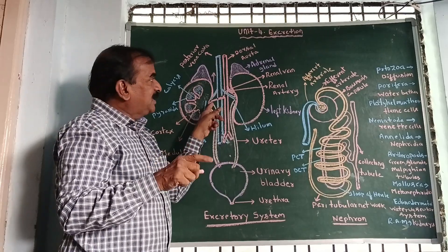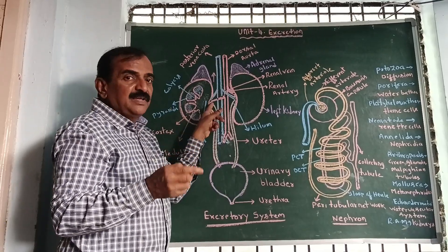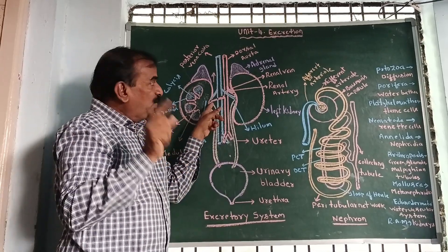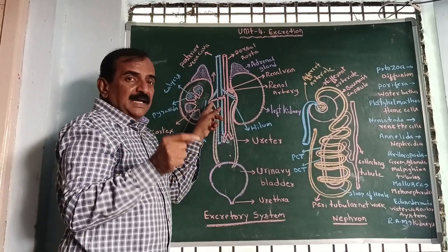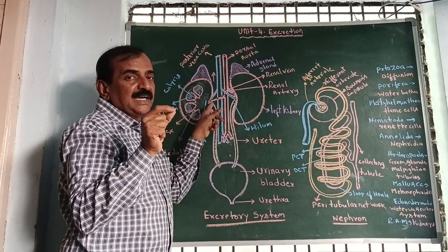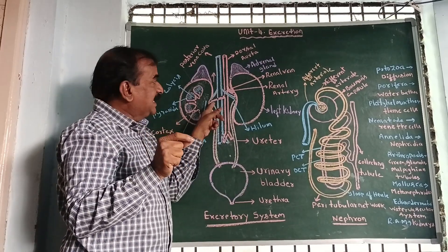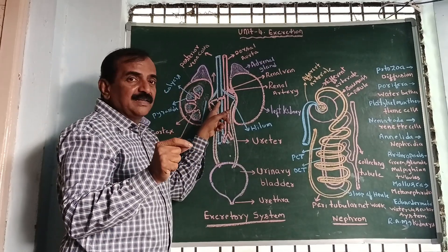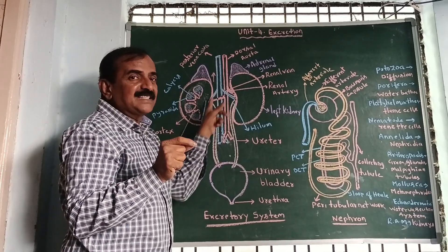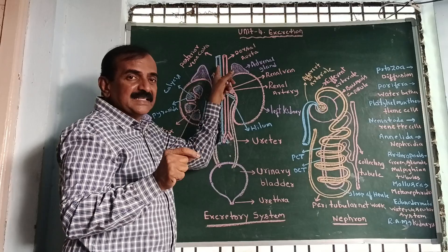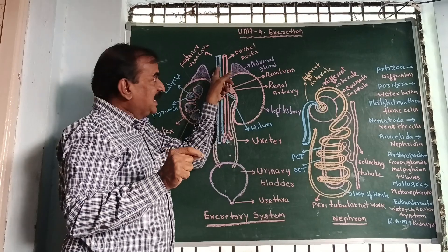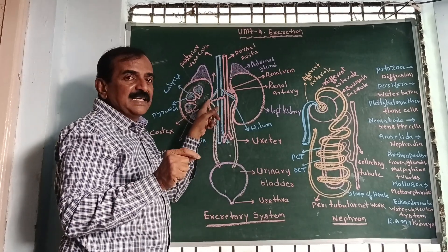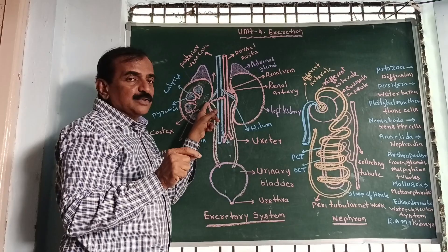Here we are observing two blood vessels attached to the kidneys — the renal vein, which exits from the kidney, and the renal artery, which enters into the kidney.